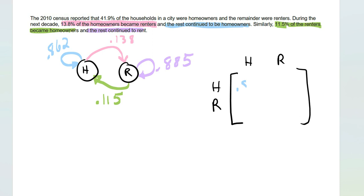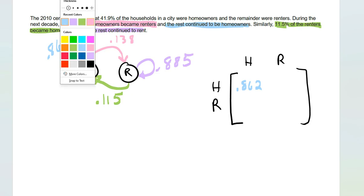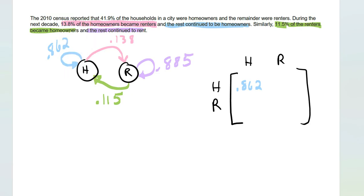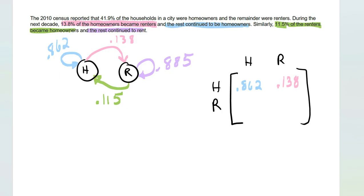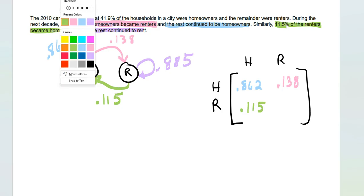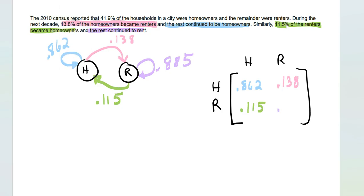H to R was the pink, so 0.138, and then R to H is the green, so 0.115, and then R to R is the purple, so 0.885.